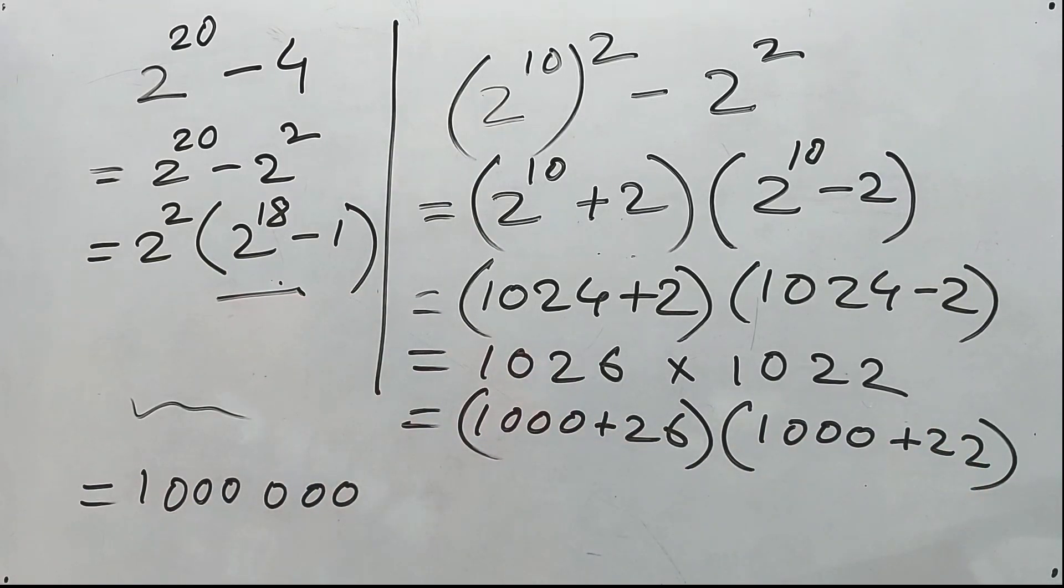Therefore, 26 plus 22. That is 48. 48 into 1000. That means 48,000. Clear? Here.